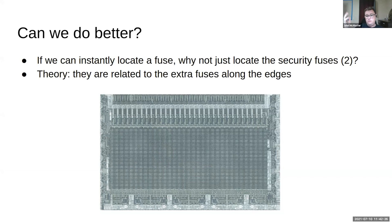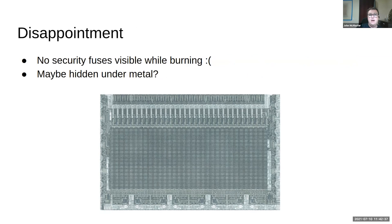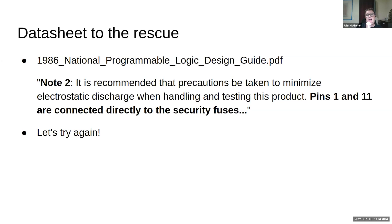I had a camera view like this on the infrared microscope. I said let's take a picture and burn the security fuses — but nothing showed up. I thought maybe they knew someone would try probing and hid the fuses — if you put a metal layer over them, you wouldn't see them. I looked around the chip but didn't see anything. Then looking through documentation I found a datasheet with a very interesting ESD caution note: pins are directly connected to the security fuses. The fuses aren't in the main logic area — they're probably in the broader area of the chip.